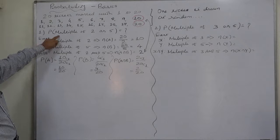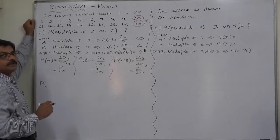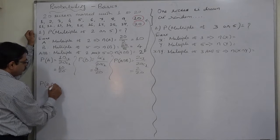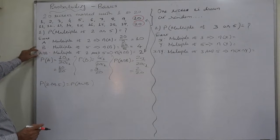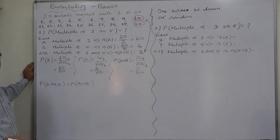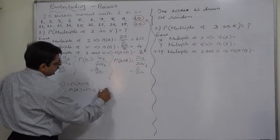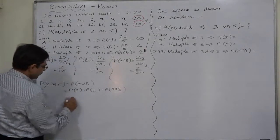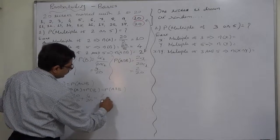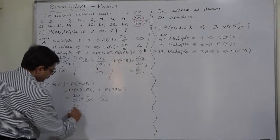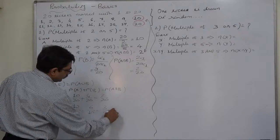The event that the number on the ticket is a multiple of 2 or 5 is the union case — P(A union B). Since the joint event is possible, we use the general law of addition: P(A) + P(B) − P(A intersection B) = 10/20 + 4/20 − 2/20 = 12/20 = 6/10 = 3/5 = 0.6.